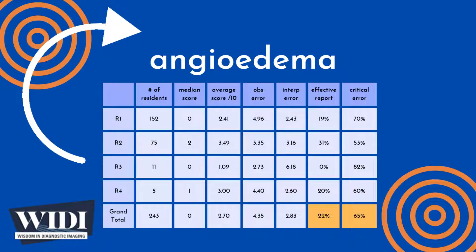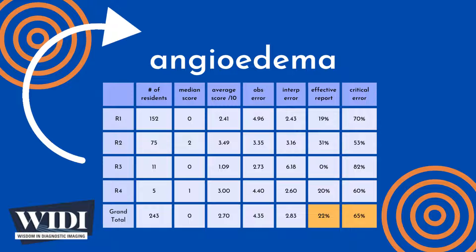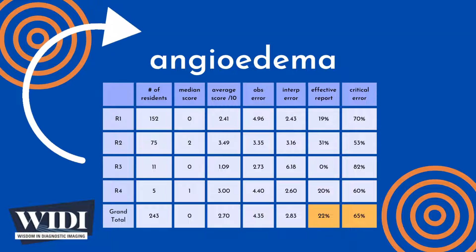We define an effective report to be one which achieves scores between 7 and 10. In terms of letter grades, this would be an A or a B. In this most missed case, 22% of residents produced effective reports.